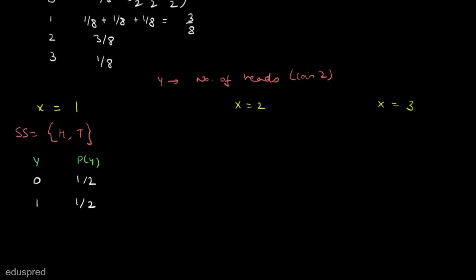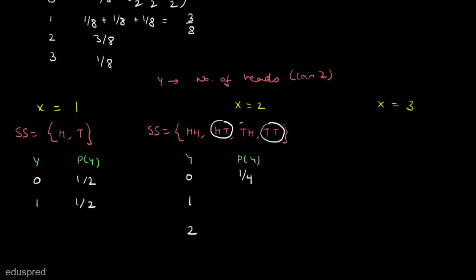When X equals 2, we toss coin 2 twice, so the sample space is {HH, HT, TH, TT}. The possible values of Y are 0, 1, and 2. P(Y=0 | X=2) = 1/4, P(Y=1 | X=2) = 1/2, and P(Y=2 | X=2) = 1/4.